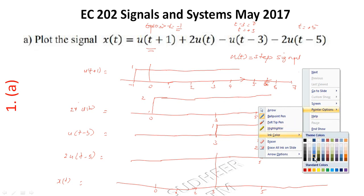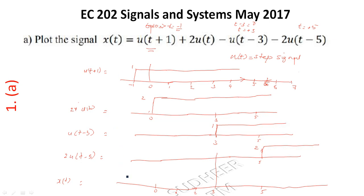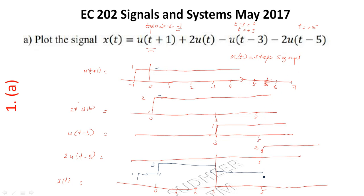At t = -1, u(t+1) starts, so magnitude becomes 1. From t = 0 onwards, adding 2·u(t) gives magnitude 1+2 = 3. That continues until t = 3, where u(t-3) is subtracted, so 3 - 1 = 2 in magnitude.